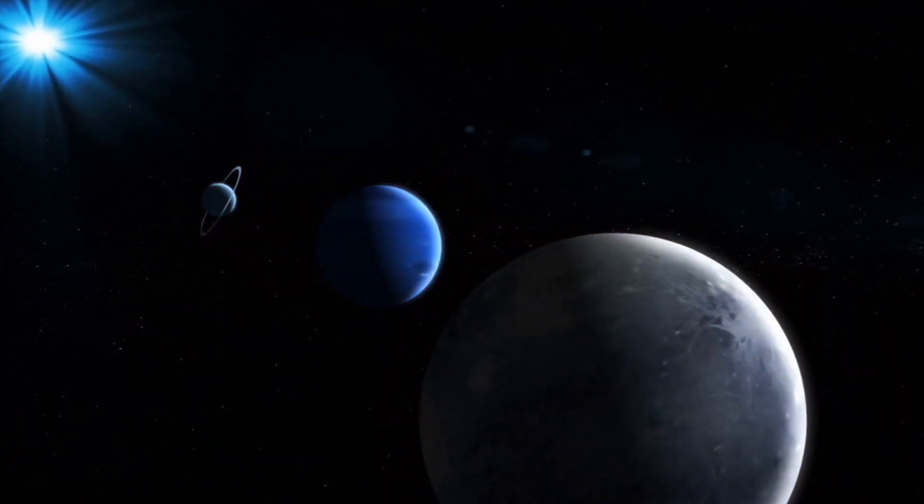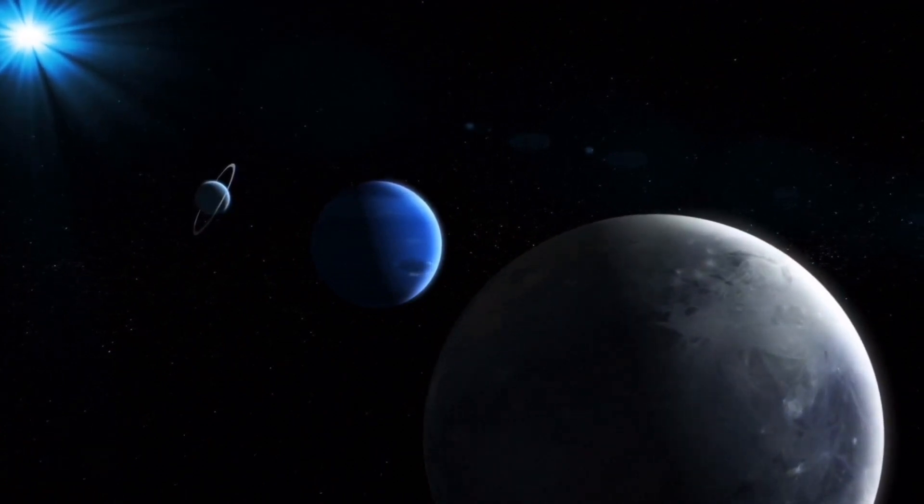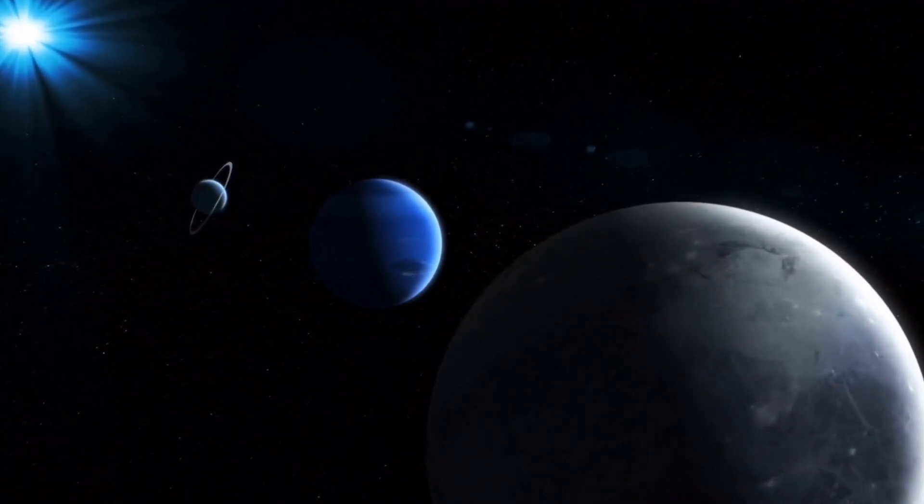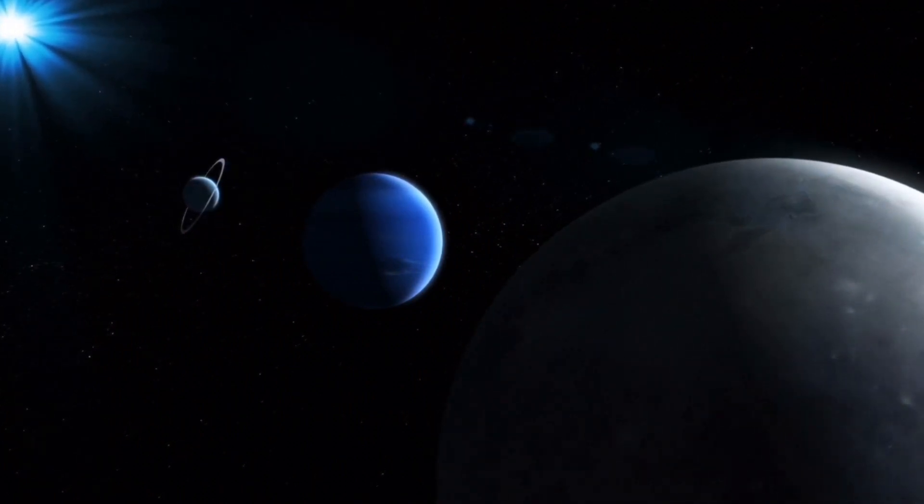The concept of an additional planet in the Solar System is not new. In the early 19th century, the discovery of Neptune through mathematical predictions based on the perturbations in Uranus' orbit was one such instance.